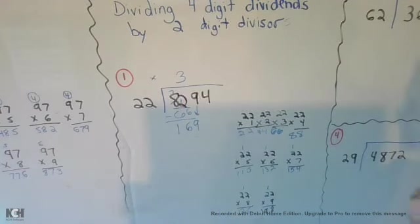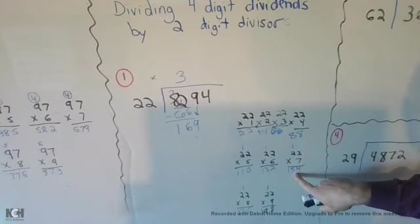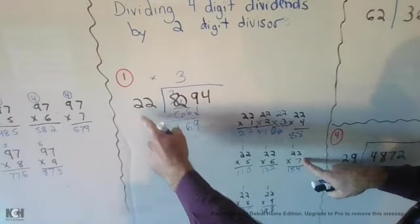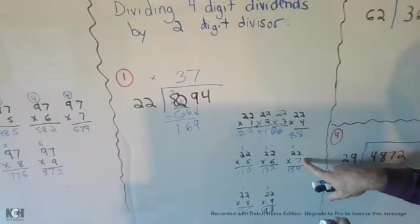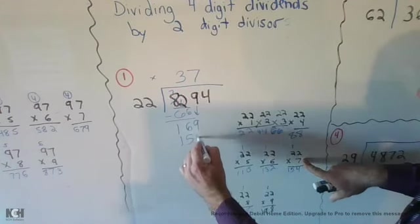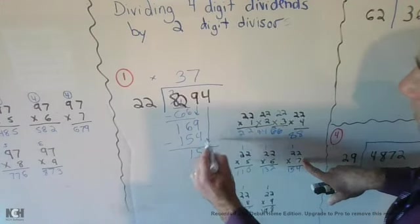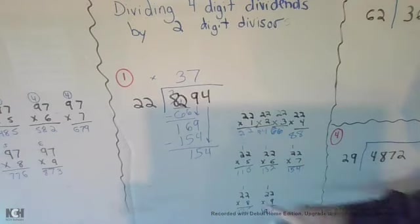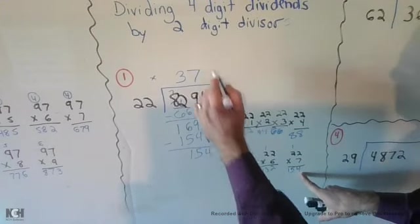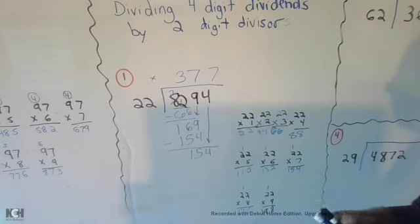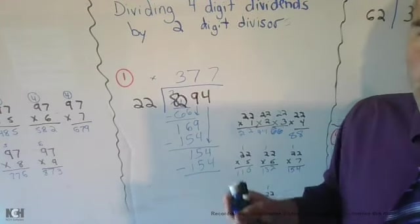What's the closest to 169 without going over? Looks like 154, so 22 goes into 169 seven times. I get 154, I'll subtract and get 15, bring down my 4. Look at that - 154. 22 goes into 154 exactly seven times. So my answer is 377 with no remainder.